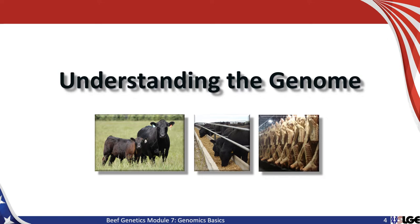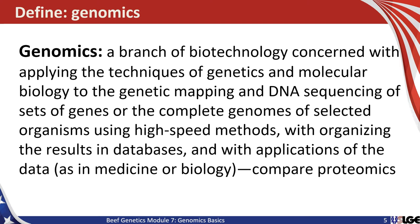Our first step in discussion of the beef cattle genome is simply to get some bearing and understanding of what the genome looks like and how it's constructed. A good first step is to define genomics. Genomics is simply a branch of biotechnology concerned with applying the techniques of genetics and molecular biology to the genetic mapping and DNA sequencing of sets of genes or the complete genomes of selected organisms using high-speed methods, with organizing the results in databases and with applications of the data as in medicine or biology. Beef cattle genomics is simply collecting DNA samples and genotypes, organizing that information in a database, and then using that information to inform a beef cattle genetic evaluation that produces EPDs and selection indexes — tools used by beef producers in the United States and around the world to make selection decisions.